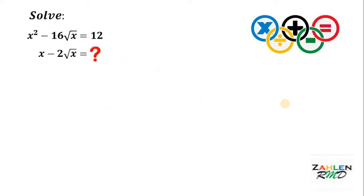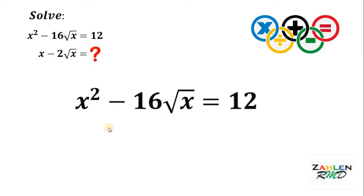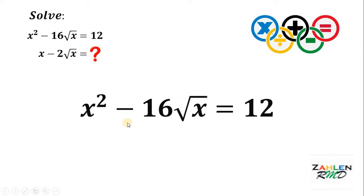I hope you paused this video. Now let's answer this question together. In order to find the value of x minus 2 times square root of x, we will use some simple tricks. So let's have our given equation: x squared minus 16 times square root of x equals 12.